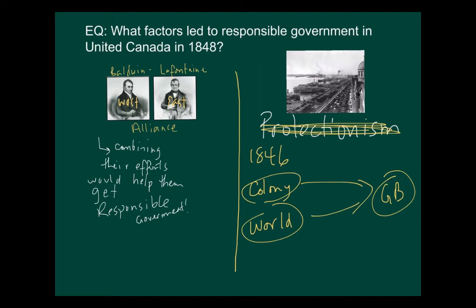People were so upset that protectionism was abandoned that they actually started talking about annexing Canada to the United States — basically becoming part of the States in hopes of accessing a huge market to improve profits. The Baldwin-La Fontaine Alliance helped push for responsible government, but also the fact that the colony was no longer protected economically by Great Britain with the policy of protectionism. Those two things together led many people to start demanding responsible government.